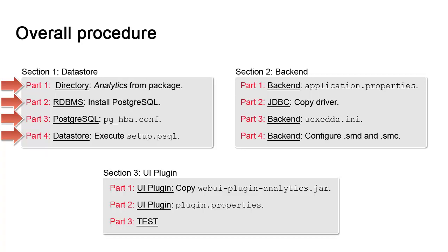In the second section, we configure the backend. We update application.properties so that it can interact with the data store and the automation engine database. We copy the JDBC driver to enable data connections. We update ucxedda.ini so that the backend can talk to the automation engine. Finally, we configure the service manager so that analytics auto-starts at boot. In the last section, we copy the UI plugin over to Tomcat and update its plugin.properties so that it can talk to the backend over the REST API.